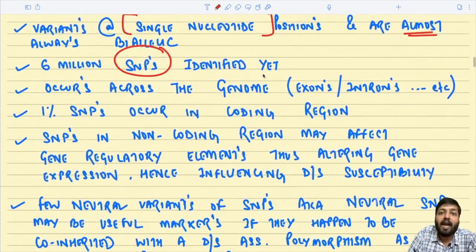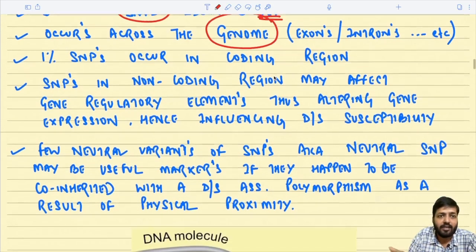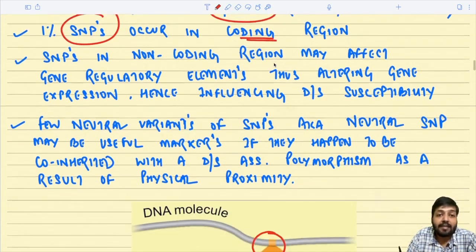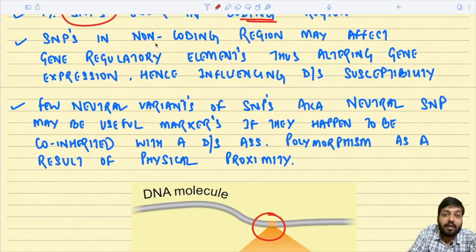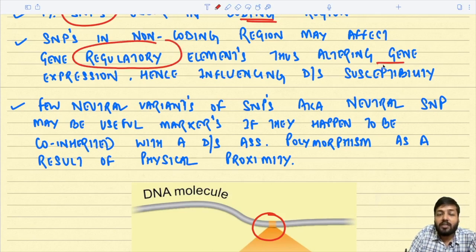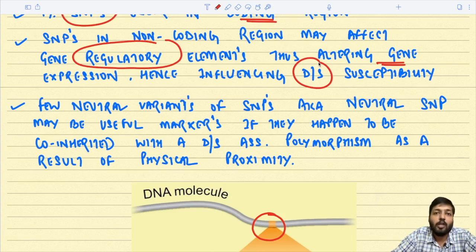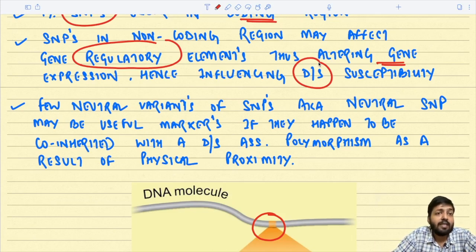Approximately six million SNPs have been identified across the entire genome — found in exons, introns, and other regions. About one percent of SNPs can also occur in the coding region of the DNA. SNPs in the non-coding region may affect gene regulatory elements, altering gene expression and hence influencing disease susceptibility.